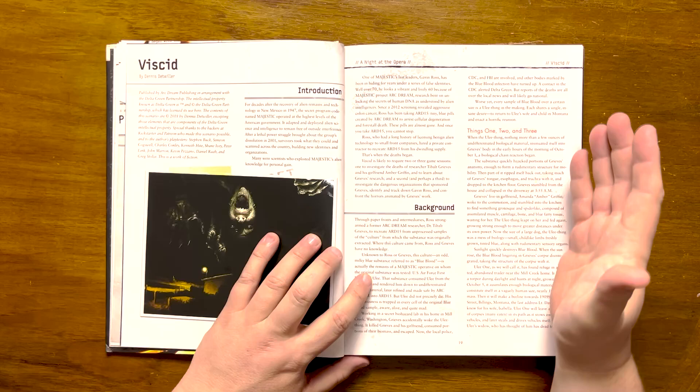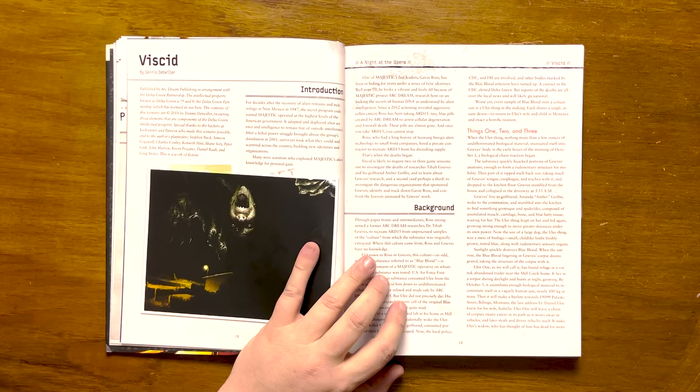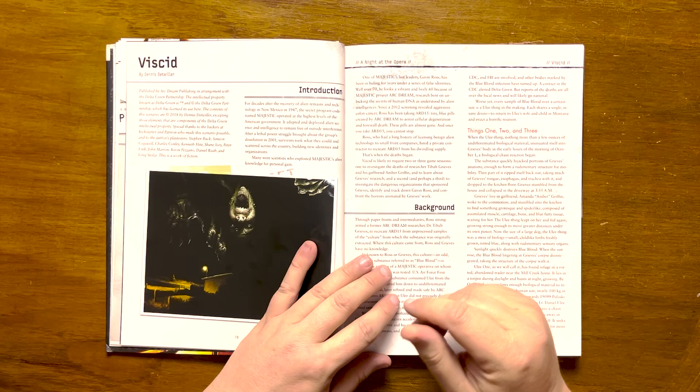The Uli thing, having fed on Greaves, has begun a biological chain reaction which has started to form a rudimentary structure to enable it to move. It then killed Greaves' living girlfriend, Amanda, who discovered the Uli thing, which at this point looked like a grotesque spider-like creature. It leapt on her and fed again, growing strong enough to move further. At this point, it is the size of a large dog.